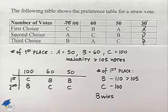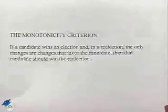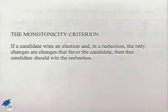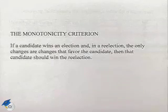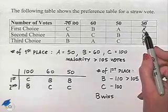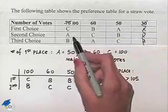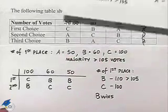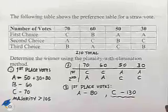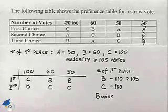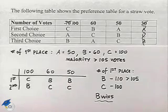Now let's look at the monotonicity criterion. If a candidate wins in an election and in a re-election, the only changes are changes that favor the candidate, then that candidate should win the re-election. Let's look back at the fact that when we took the 30 votes and transferred them into the first column, C was going to be the beneficiary. Remember that when we did the straw vote to begin with, C was the winner. However, when we look at those changes being made, B ends up being the winner. And so the monotonicity criterion is not satisfied.